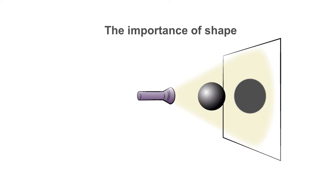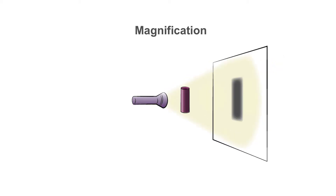If the object is a sphere, the shadow will always be a circle. If we take this hollow cylinder and now bring it closer to the light beam, we get magnification.